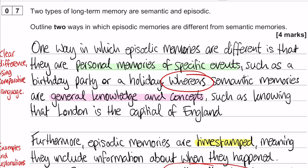One way in which episodic memories are different is in terms of what they are. They are personal memories of specific events, such as birthdays or a holiday. Whereas semantic memories are general knowledge and concepts, such as knowing that London is the capital of England.